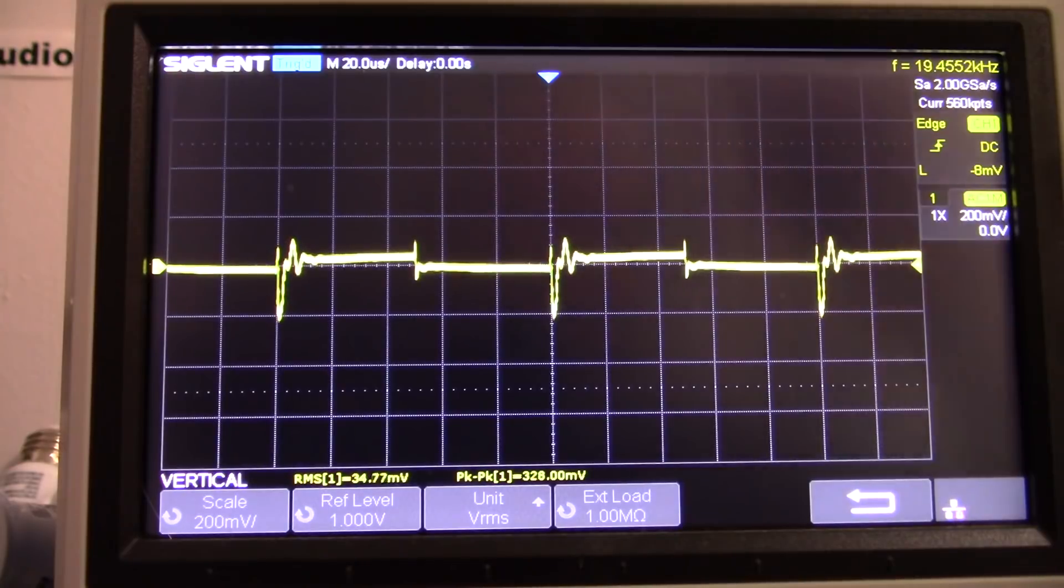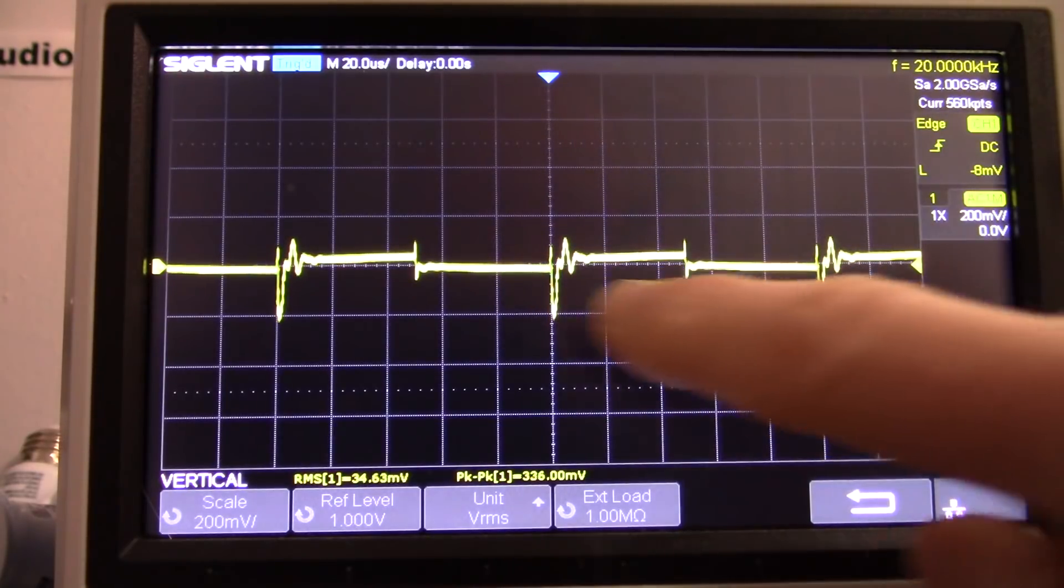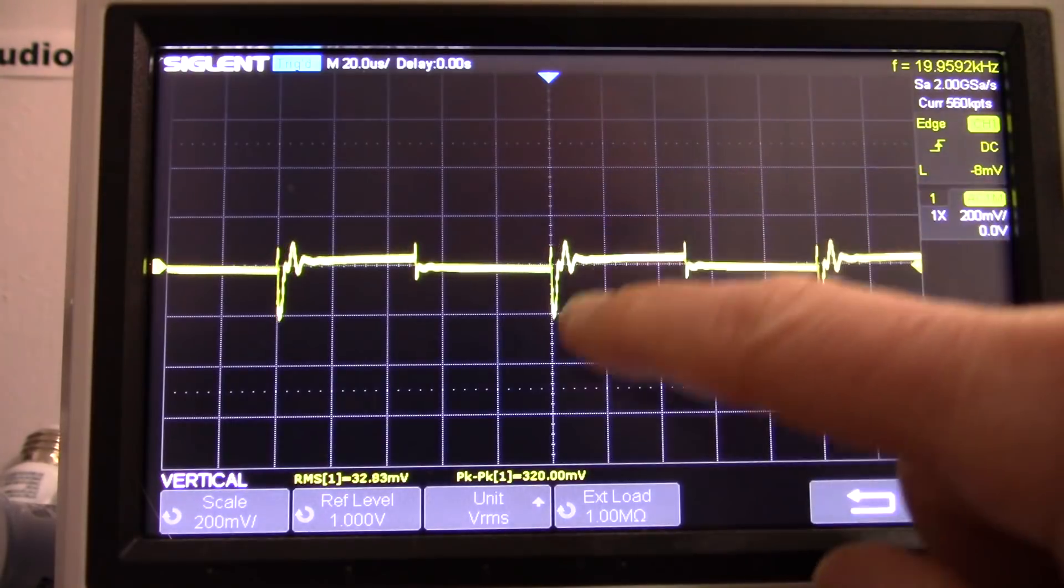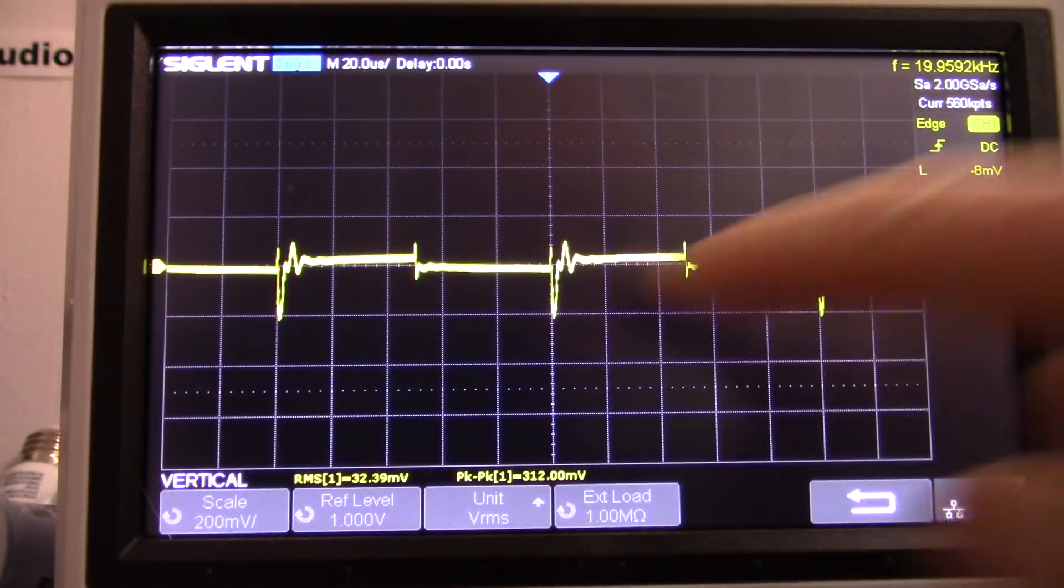So now I'm scoping across the supply rails right at the amplifier chip pins. 200 millivolts per division. So yeah, that's, this is RMS.